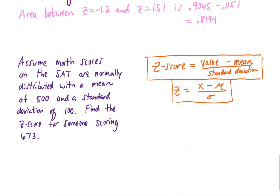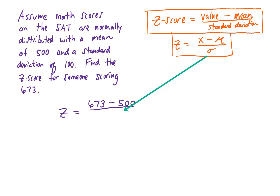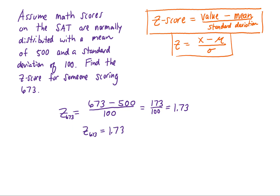Let's use this formula in an example. We're going to assume math scores on the SAT are normally distributed with a mean of 500 and a standard deviation of 100. We're going to find the z-score for someone scoring 673. Using our z-score formula, our data value is 673, we subtract the mean of 500, and divide by the standard deviation of 100. That gives us 173 over 100, and dividing that out, we get a z-score of 1.73. In your book, they may write this as z-subscript-673 equals 1.73.